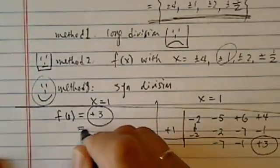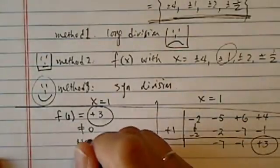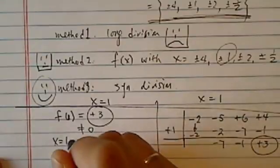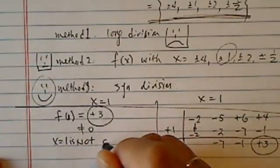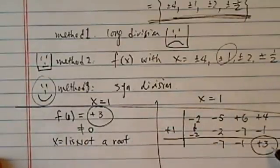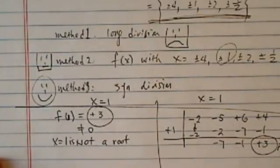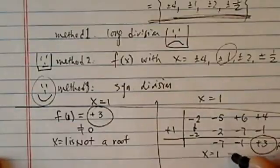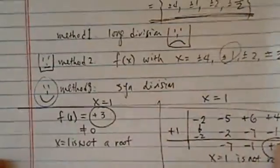If we have time, we might actually go through it. But the point is, if f of 1 is not equal to 0, then x1 is not a root. Similar here, if the remainder here is 3 and not 0, that means f of 1 or x1 is not a root.